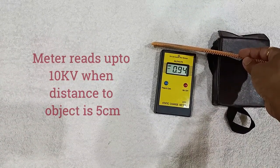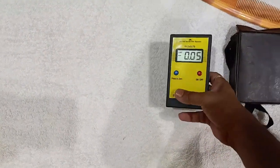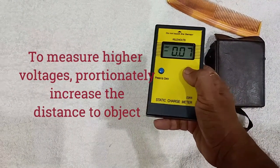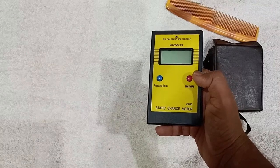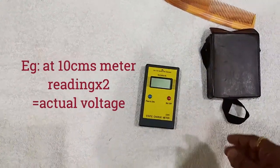The meter reads up to 10 kV when the distance to object is 5 centimeters. To measure high voltages, proportionately increase the distance to object. Example: at 10 centimeters, multiply the reading by 2 to get the actual voltage.